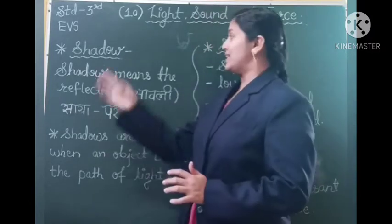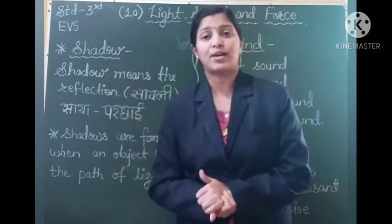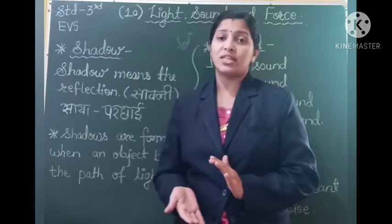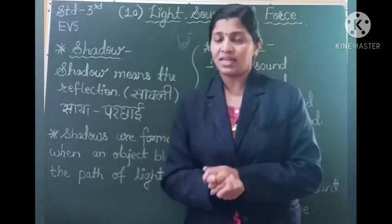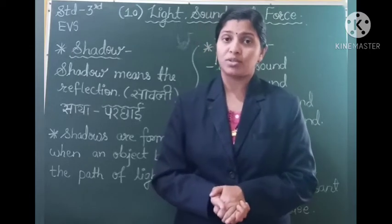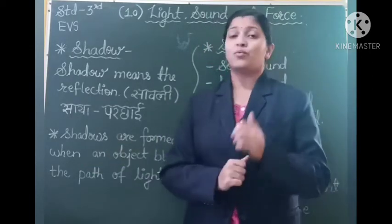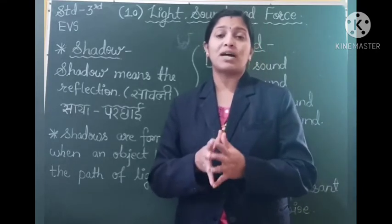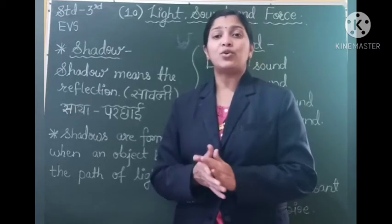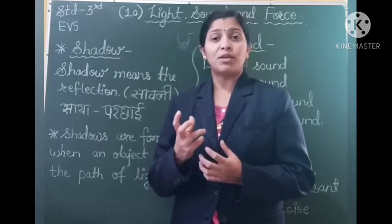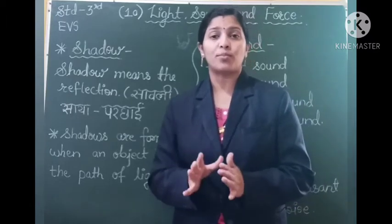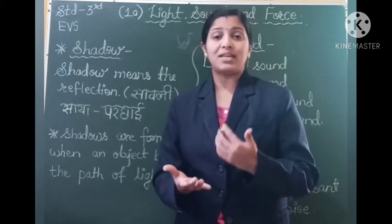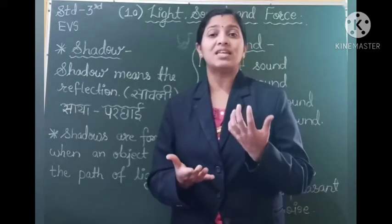Now let us move on to the next point — shadow. What is a shadow? In Marathi we call it Sauli, and in Hindi we call it Saia or Parchai. A shadow is formed when an object obstructs or blocks or stops the path of light. A shadow is formed when the light coming from a source of light is stopped or obstructed by any object — then on the other side of the light we can see a shadow.